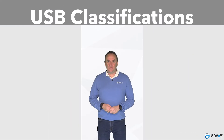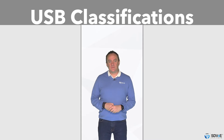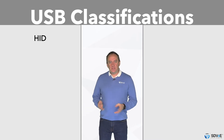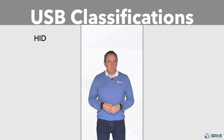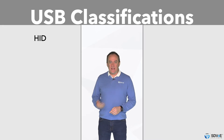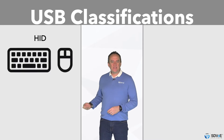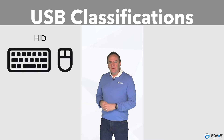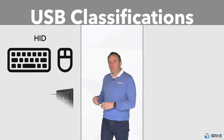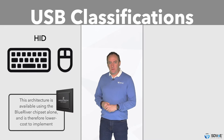SDVoE manufacturers choose between two different architectures for USB connectivity. The first method offers USB compatibility limited to human interface devices, or HID, such as keyboards, mice, and trackpads. This architecture is available using the Blue River chipset alone and therefore it is lower cost to implement.